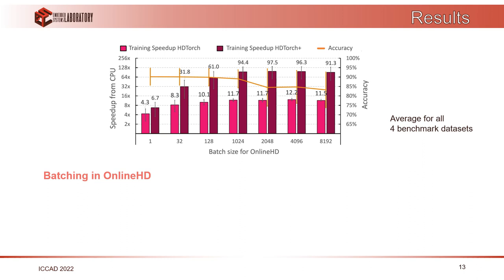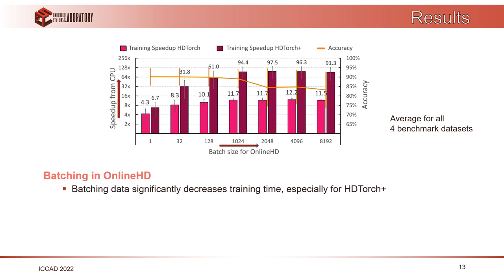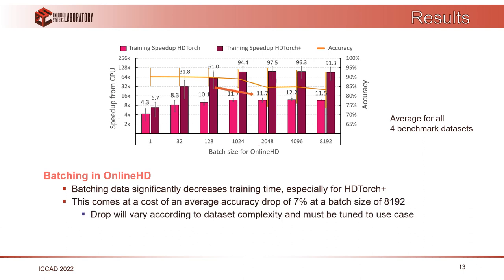For online HD, speedup is limited due to sample-by-sample processing. We tested what happens to accuracy and speedup when we batch data into batches. Increasing batch size increases speedup, especially for HDTorch Plus, with a saturation after a certain batch size. However, this comes at the cost of an accuracy drop after a certain batch size. There is an optimal value balancing speedup and accuracy, which probably needs to be tuned for each specific use case.